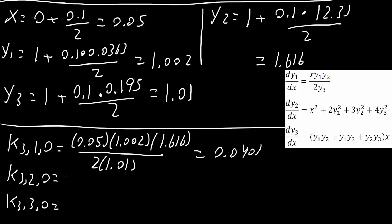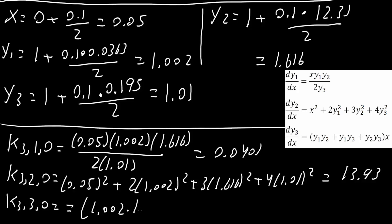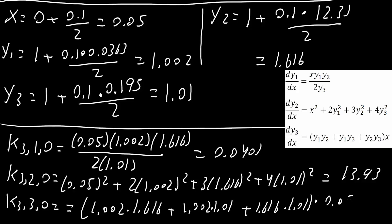For the second equation: 0.05 squared plus 2 times 1.002 squared plus 3 times 1.616 squared plus 4 times 1.01 squared, giving 13.93. For the third equation: 1.002 times 1.616, plus 1.002 times 1.01, plus 1.616 times 1.01, times x which is 0.05, giving 0.2132.